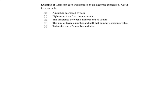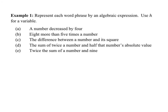Let's start with the first example — five different scenarios. Look at part A together: 'a number decreased by four.' We don't know the number, so we call it H. Decreased means subtraction. So it's H minus four. That's a very simple first example. Now try parts B, C, D, and E on your own. Consider parentheses — you'll need them and need to be very specific.